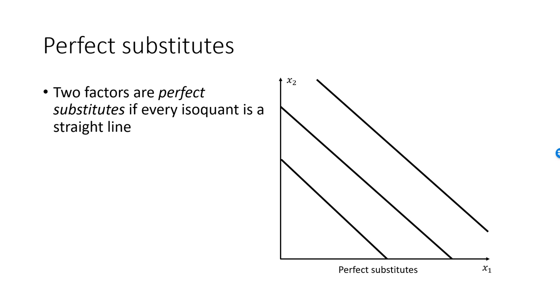If it is the case that every isoquant is a straight line, then we say that the factors of production are perfect substitutes. Production factors in computer games are quite often perfect substitutes.